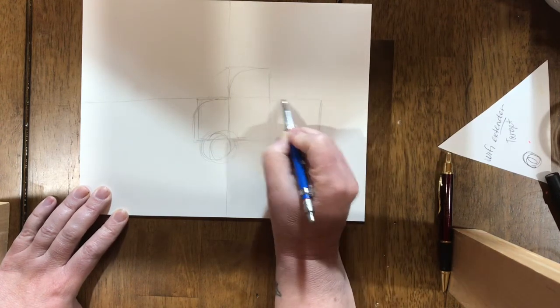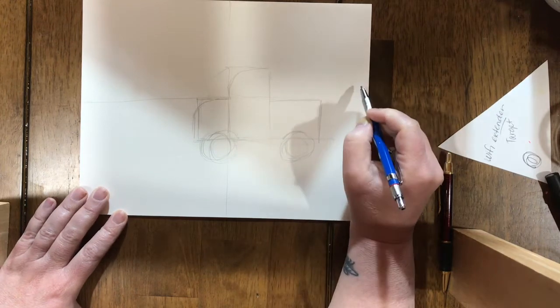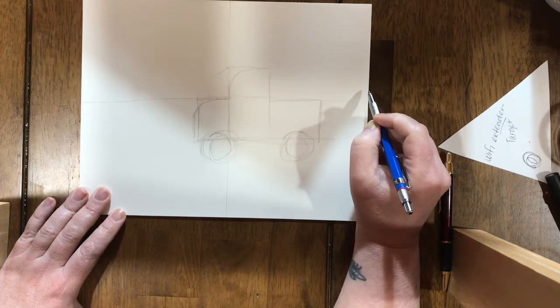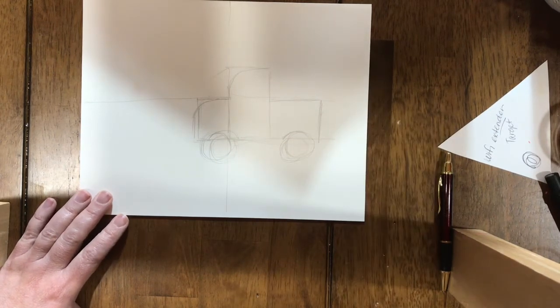Once I have everything the way I want it, the next step will be to outline or draw on top of my pencil with a marker.